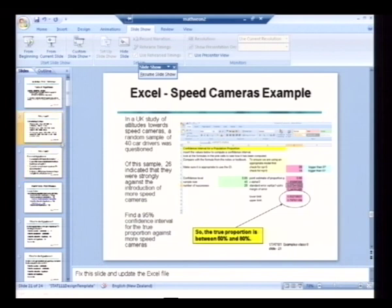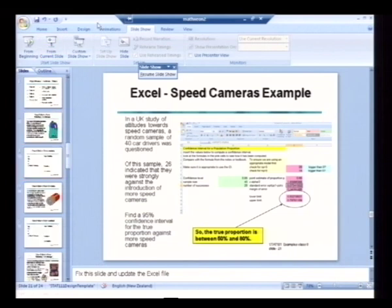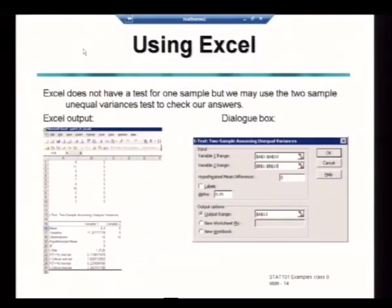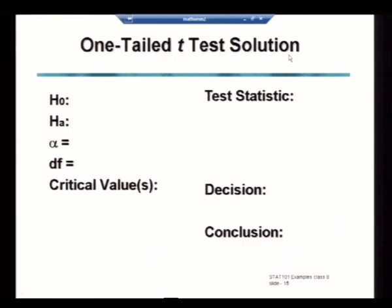So going back to our Excel output here, going back to the slide had the information that I've just shown you in Excel down on the left hand side and the dialogue box increased in size on the right hand side. Now the information that we can take from there to complete our test template.